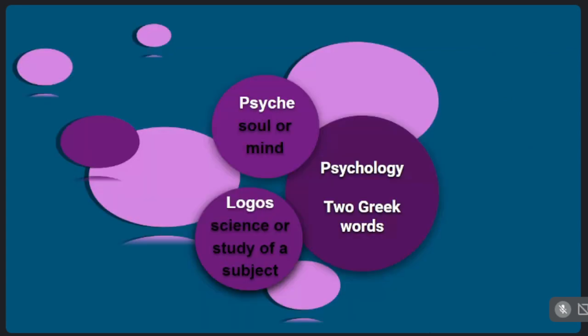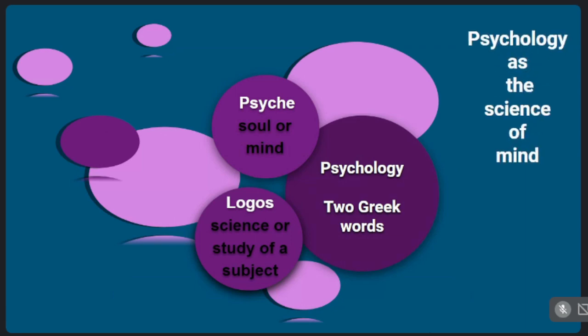The term psychology is derived from two Greek words: psyche, which means soul or mind, and logos, which means science or the study of a subject. So psychologists define psychology as the science of mind. Psyche means soul or mind, and logos means science.